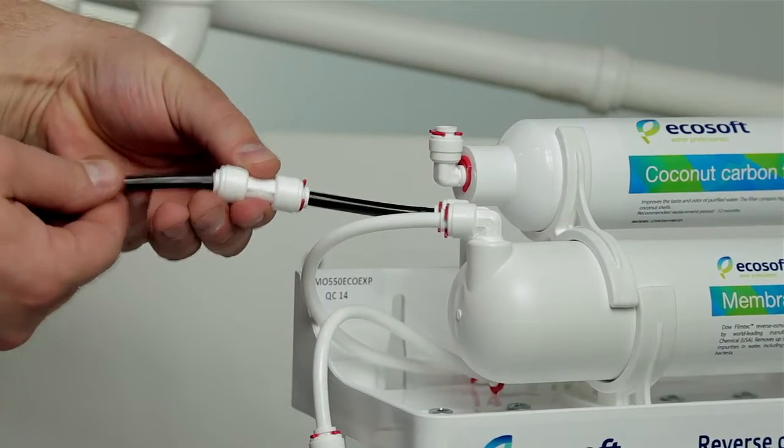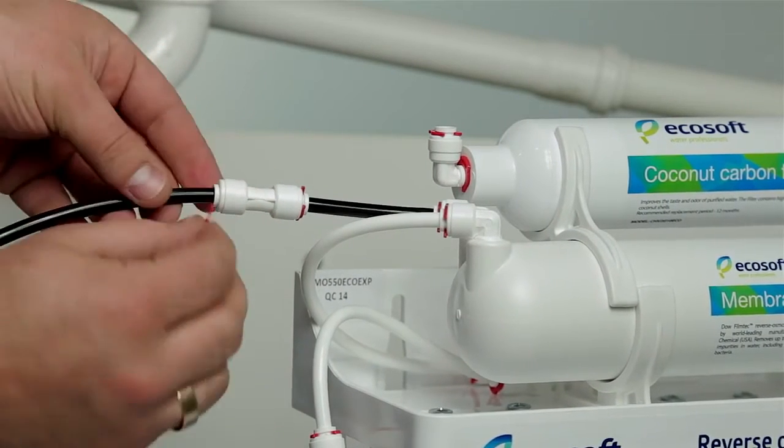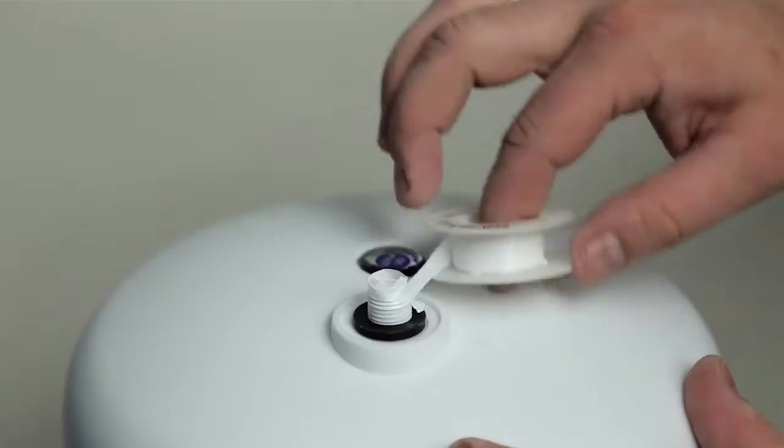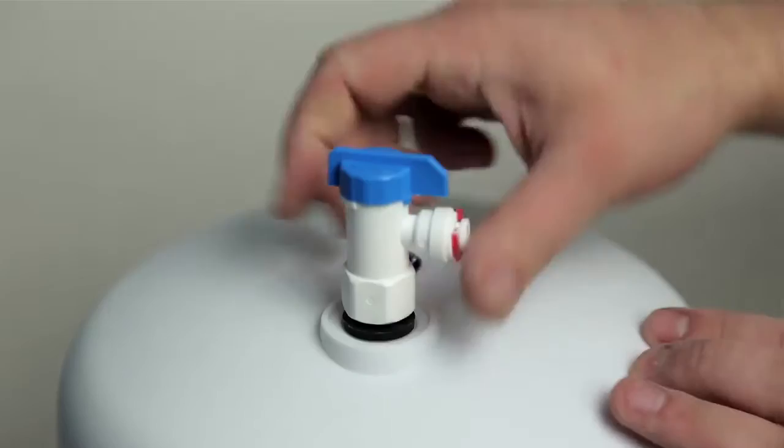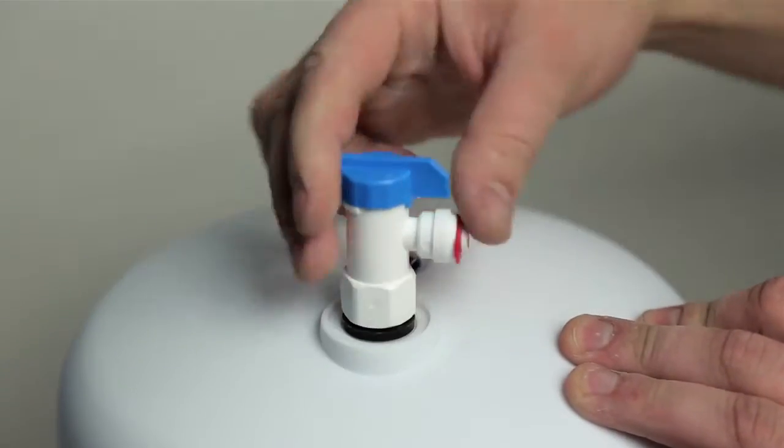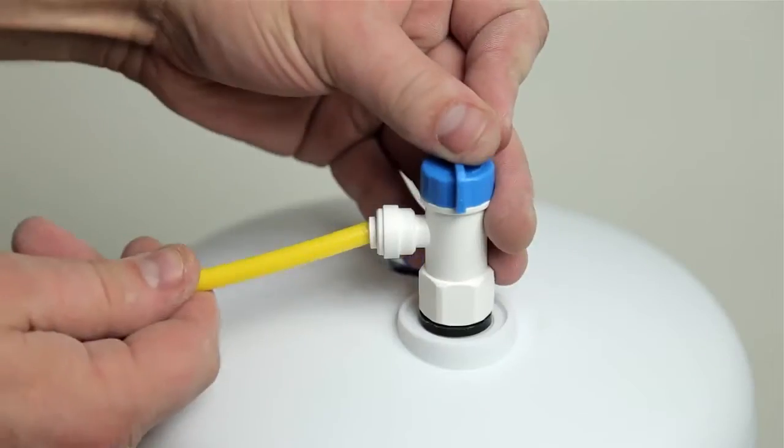Connect the other end of the black tube with the concentrate outlet of the membrane housing. Put a few turns of PTFE tape on the thread on the tank outlet. Screw the tank valve onto the tank outlet. Close the tank valve.